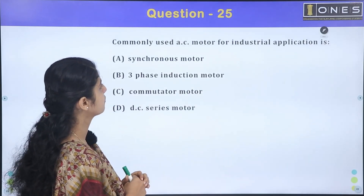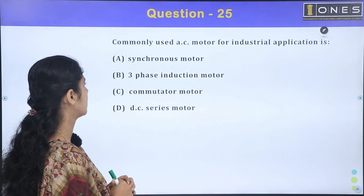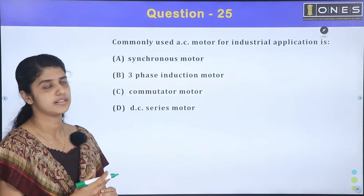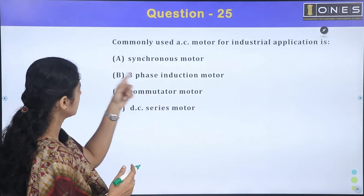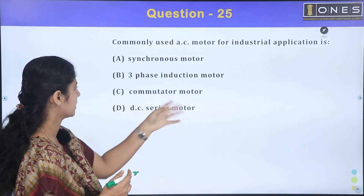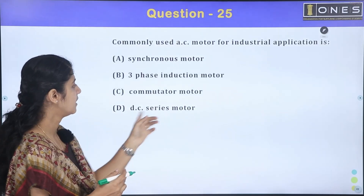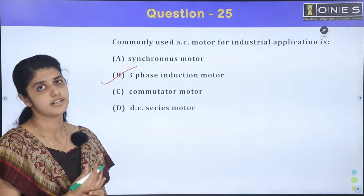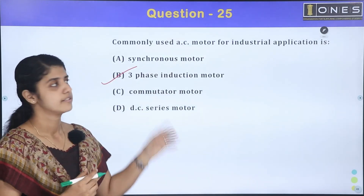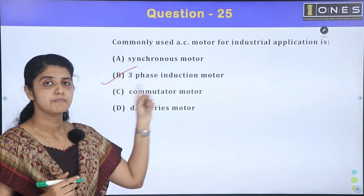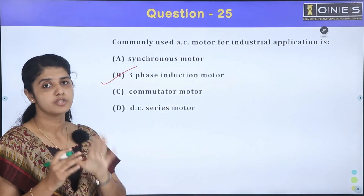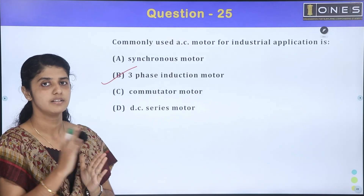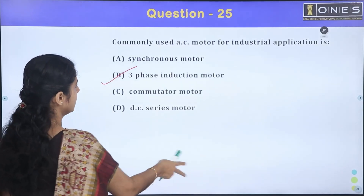Question 25: Commonly used AC motor for industrial application. In industries, the commonly used motor is the three-phase induction motor. The other options are commutator motor and DC series motor, but the answer is three-phase induction motor. For fine speed control, a DC motor is used.